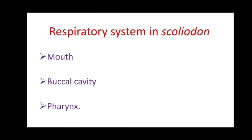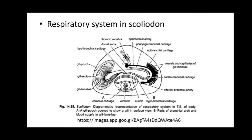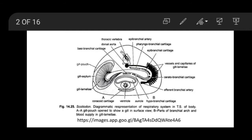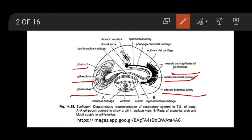The respiratory system in Scoliodon consists of the mouth, buccal cavity, and the pharynx. This diagram shows the respiratory system in Scoliodon, including the gill lamina, gill septum, gill pouch, and basihyal cartilage. You can also see the afferent branchial artery, ceratobranchial cartilage, and the capillaries of the gill lamina.